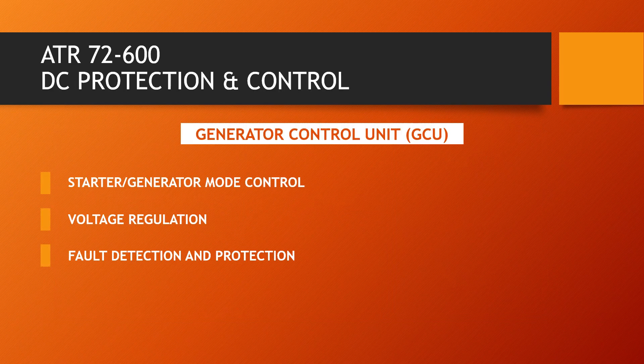The Generator Control Unit, GCU, is associated with each generator and provides control for the generator contactor and the start contactor for starter-generator mode control. The GCU also monitors the point of regulation where voltage is maintained constant as the load varies. It provides fault detection and protection for over or under voltage, fault current, generator overload, fault current limiting, bus tie lockout, and reverse current.